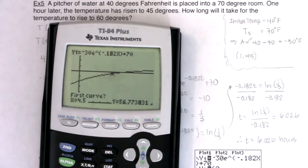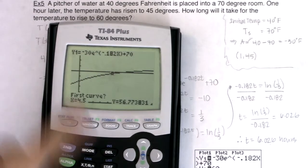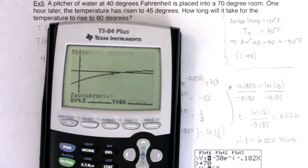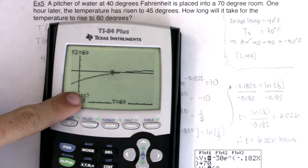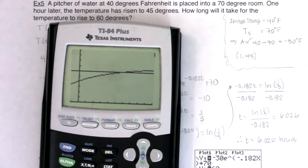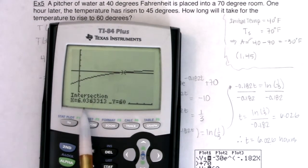And then it's just enter, enter, enter, enter, because your calculator is asking, do you want one of the curves to be the Newton's law of cooling function? Yes. Do I want one of them to be 60? Yes. And you can type in a guess or you can just hit enter. I'm just going to hit enter and there it is. Well, that says 6.036. I thought I got 6.026.